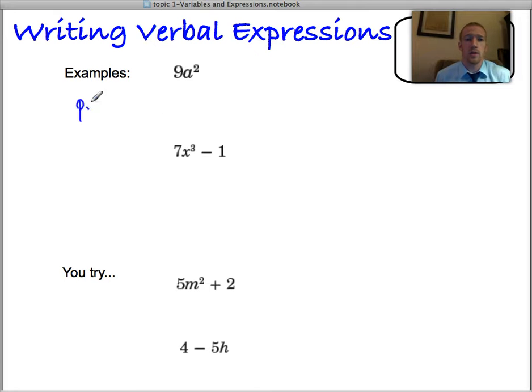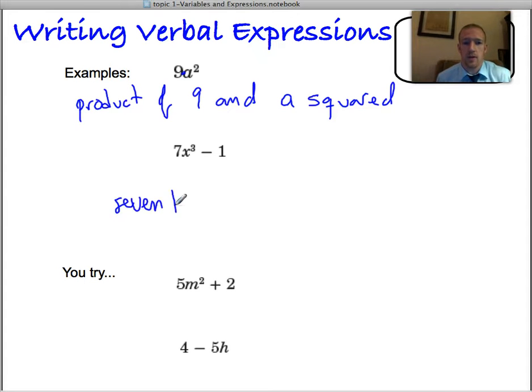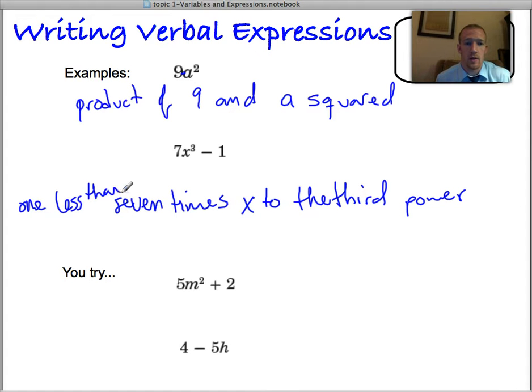So writing verbal expressions. This could be the product, because it's assumed to be multiplied right here, product of 9 and a squared. Okay, and there's more than one way to write many of these. So this could be 7 times x to the third power minus 1. So I could write minus 1. Or I could do 1 less than. So sometimes you see it written that way to try and trick you up. But 1 less than all this means all this minus 1.